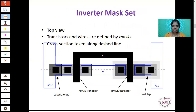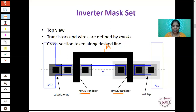Next is the inverter mask set of the CMOS transistor — the top view. Here, the transistors and wires are defined by the masks; a mask is just like one layer. The dashed line indicates the cross section of the CMOS transistor. The output Y is drawn between the drain of the NMOS and PMOS transistors. The two gates are connected together, and we apply input A. The N+ and P+ of the NMOS transistor are tied to ground, while in the PMOS transistor, the P+ and N+ are tied to VDD. The well tap and substrate tap are identified here.